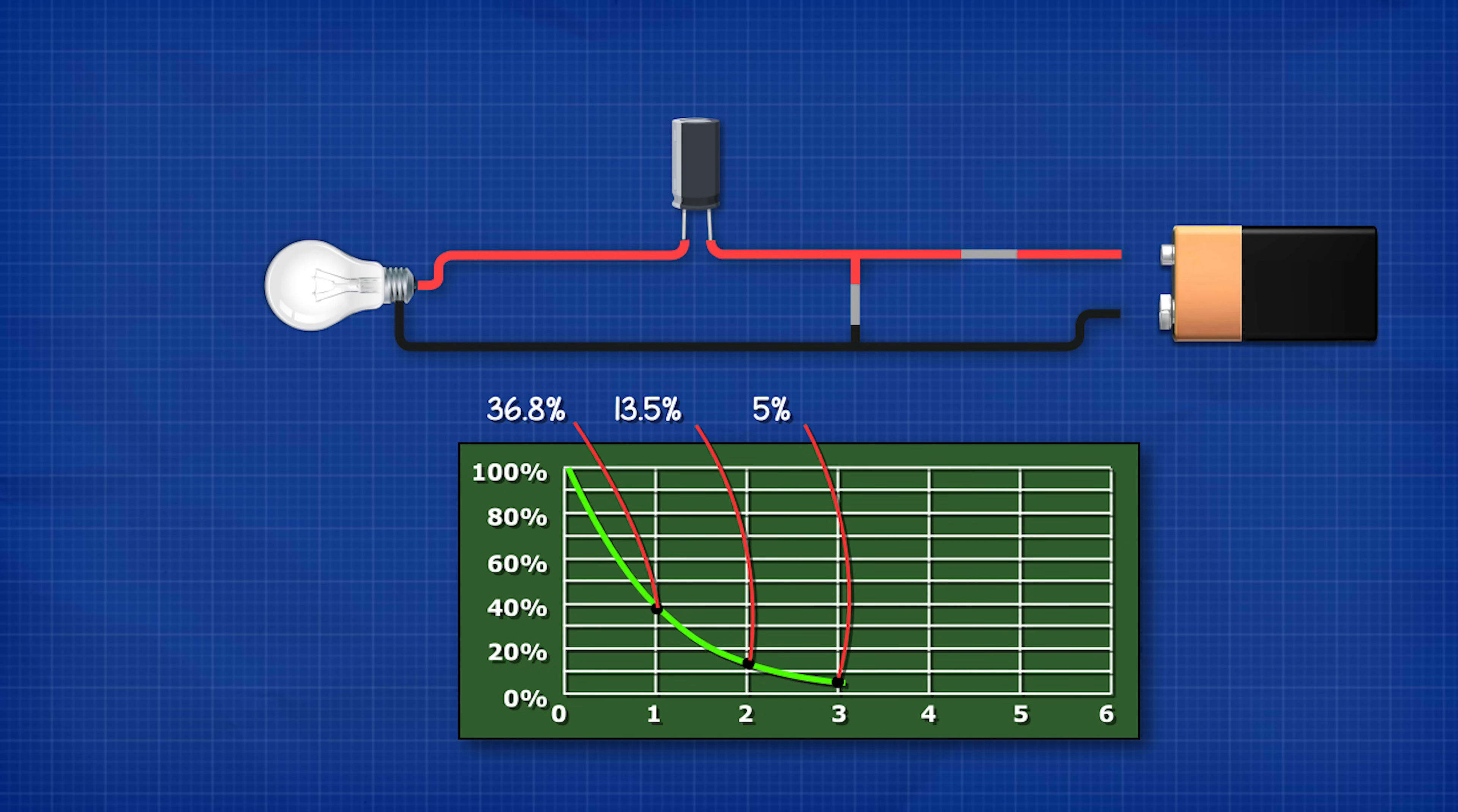point three will be 5 percent, point four will be 1.8 percent and point five will be 0.7 percent.